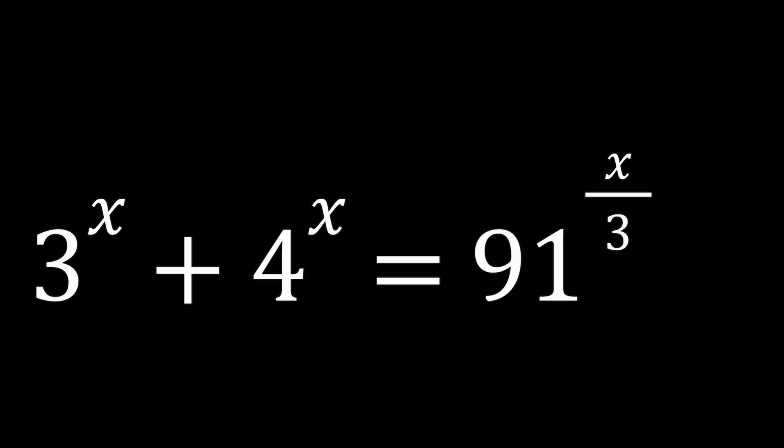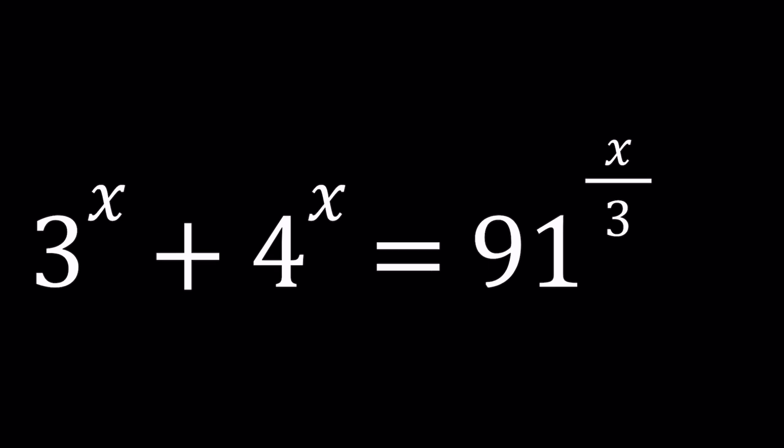Exponential equations are generally easy to solve if you have the same base and if it's usually a single expression. When we have a sum, there's no way to simplify it unless the bases and the exponents are the same. In this case we have different bases. The exponents are somewhat similar, so they all contain x.